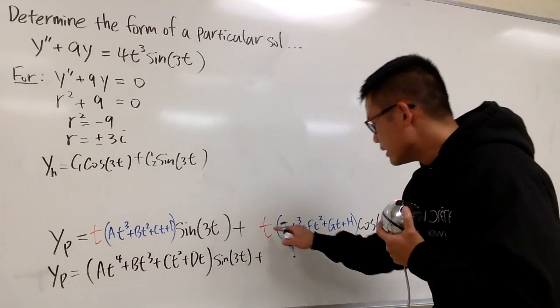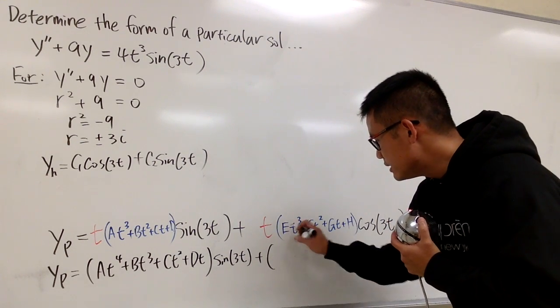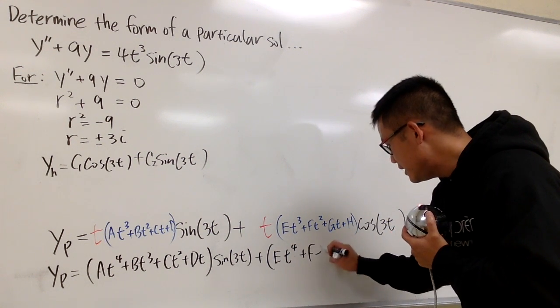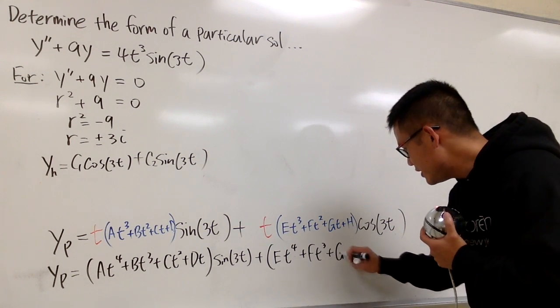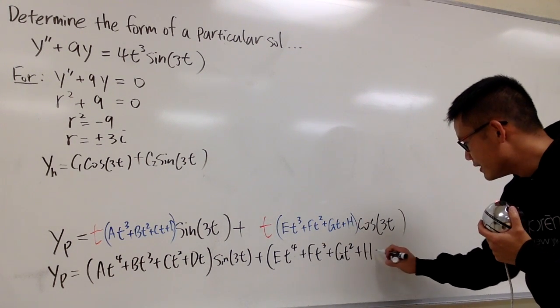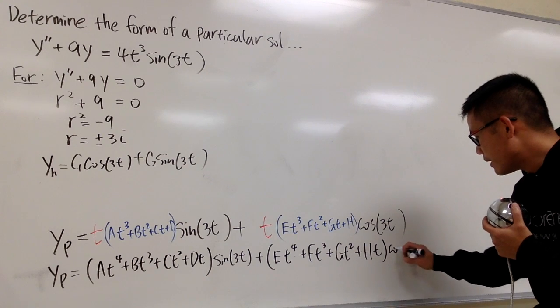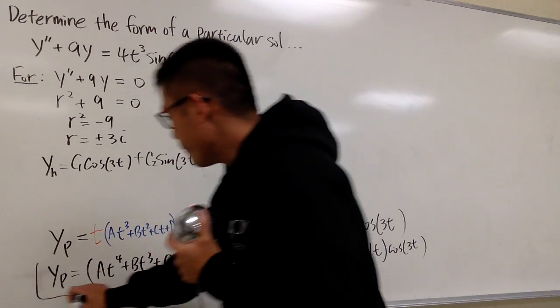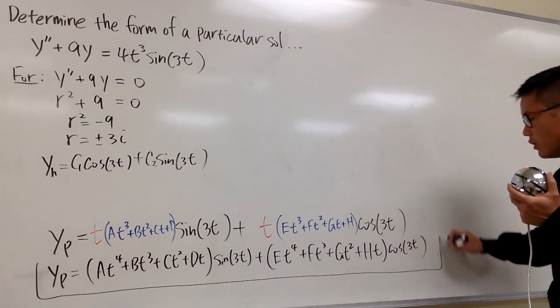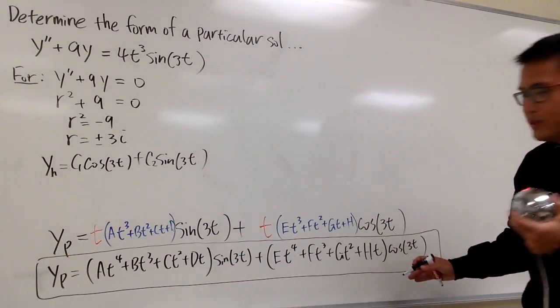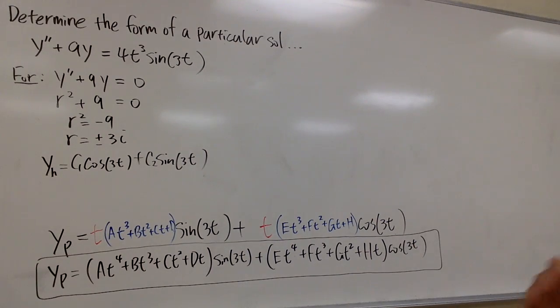And then you add it with t times all this, which is parentheses e t to the 4th power plus f t to the 3rd power plus g t squared plus t times h, which is h t. And then you multiply by cosine 3t. This is the form that we are looking for. And if you want to make me solve for a to h, I will hate you. So let's not do that. And that's it.